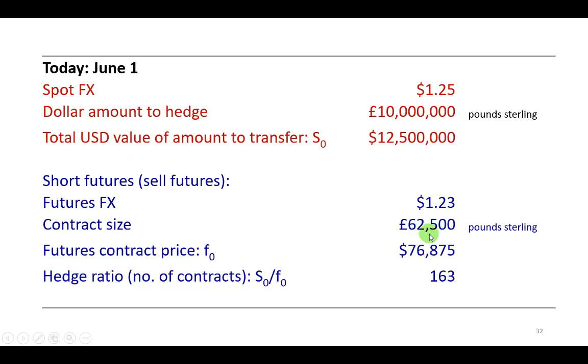So that means that the contract price is going to be the product of these two numbers, which comes out to be $76,875. How many contracts should you sell? 163, which is the spot price, the spot value of your assets, which is $12.5 million divided by the contract size, divided by the futures contract price right there.